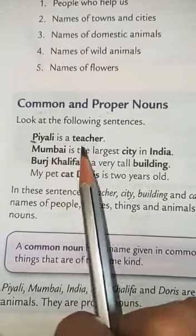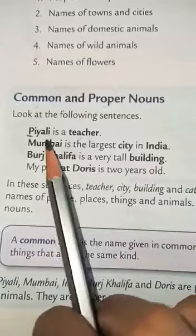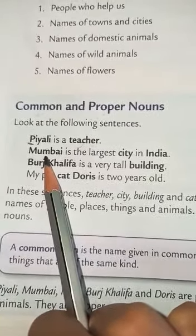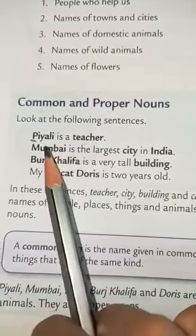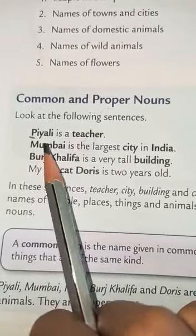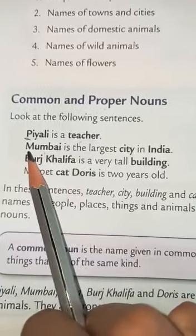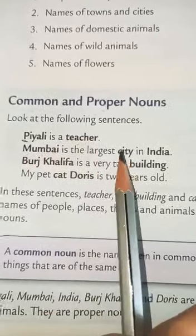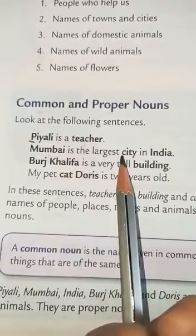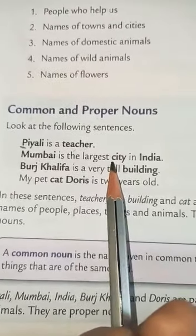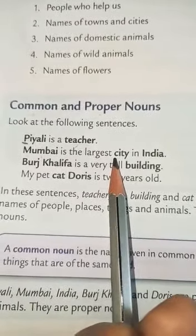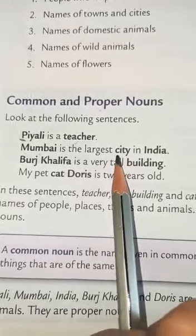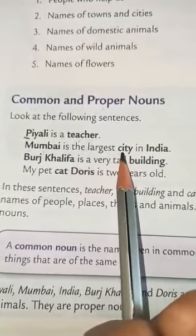Let us take one more example: Mumbai is the largest city in India. Mumbai is a specific city with one particular name, written with a capital M, so it is a proper noun. But 'city' can be any city - Rampur, Delhi, or any other. Since we are not specifying one particular city, 'city' is a common noun.